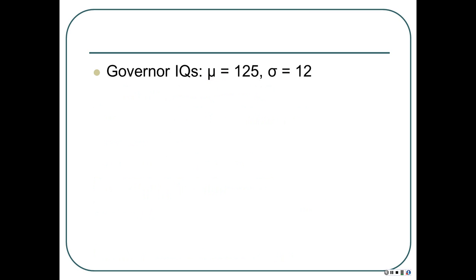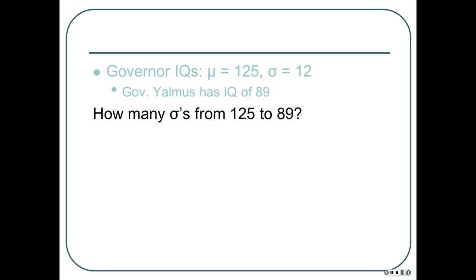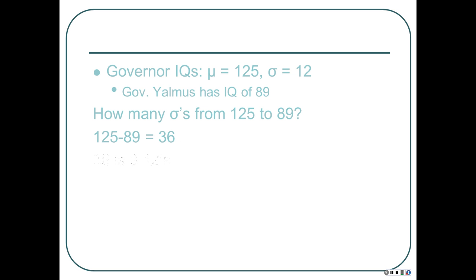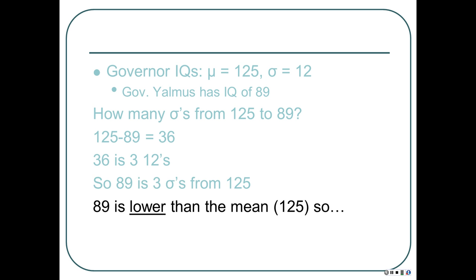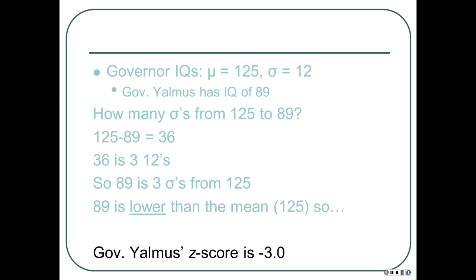Governor Yalmas has an IQ of 89. How many standard deviations from 125 to 89? The difference is 36 points. 36 is 3 twelves. So 89 is three standard deviations away from 125. Since 89 is lower than the mean, Governor Yalmas's z-score is negative 3.